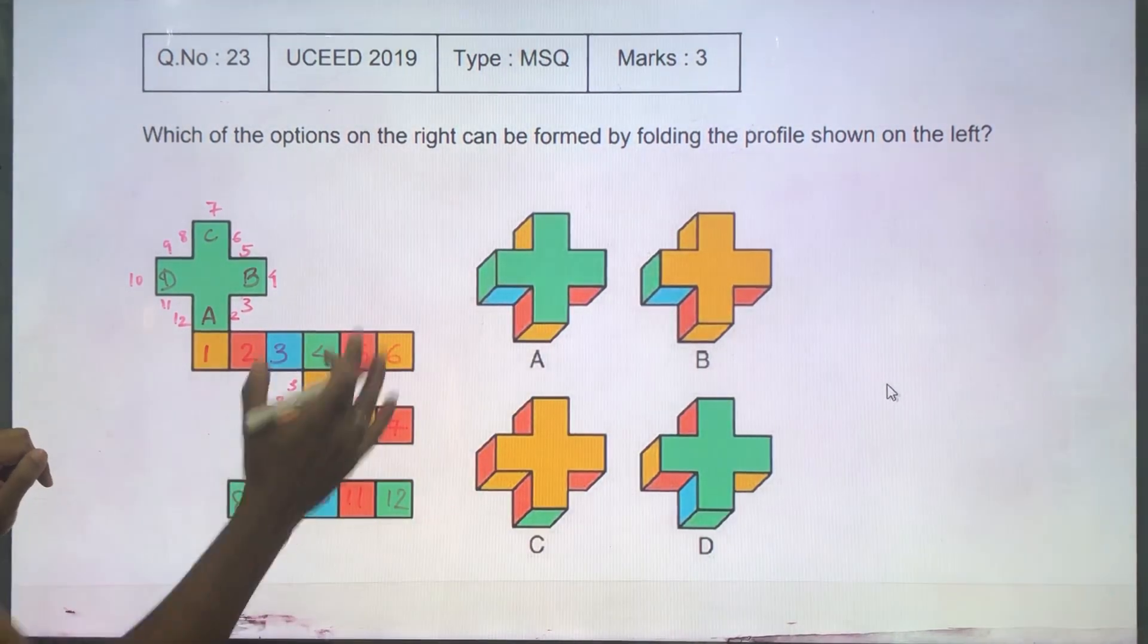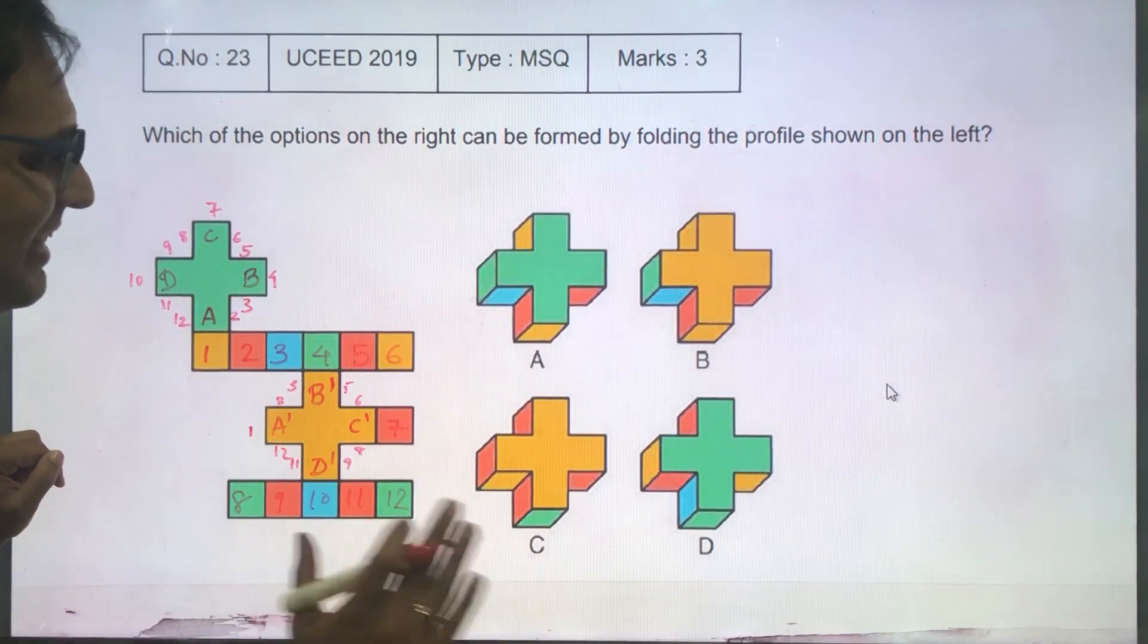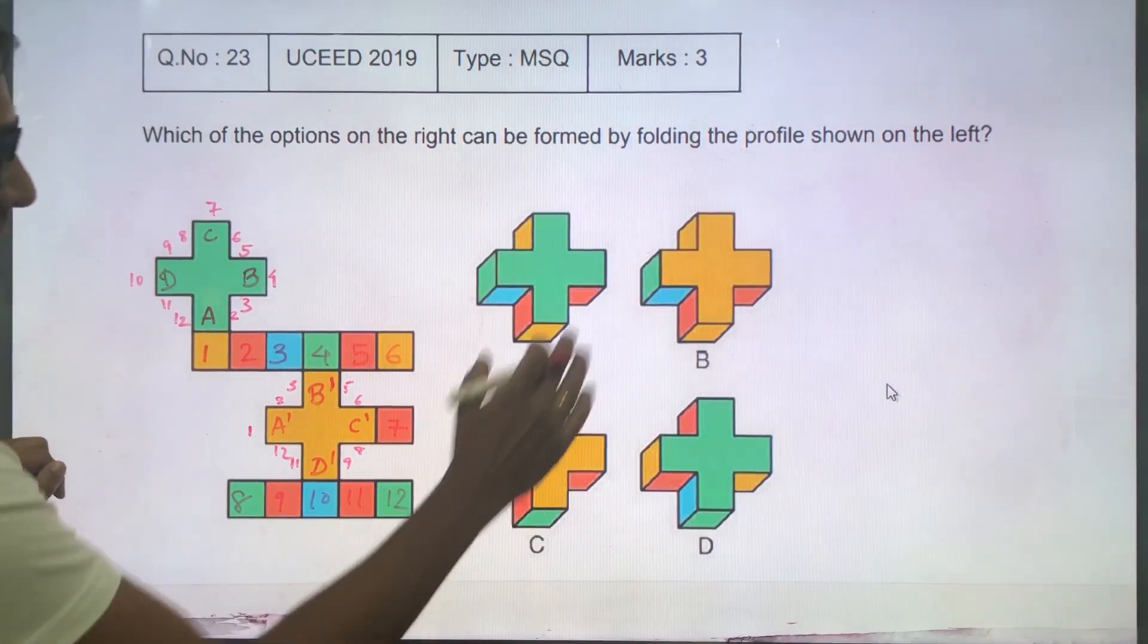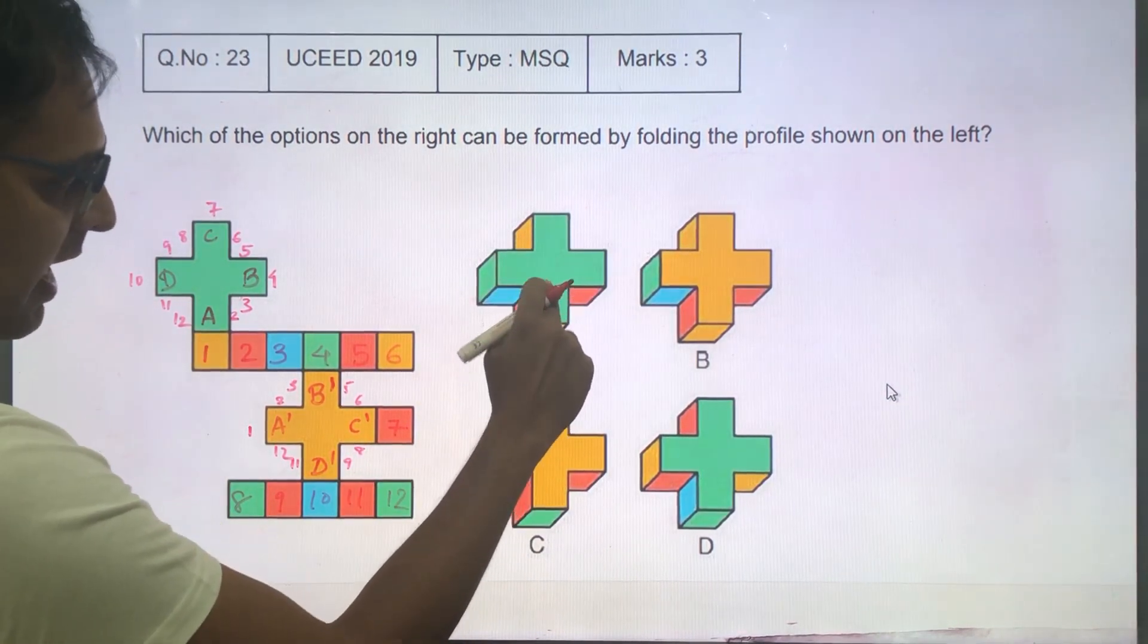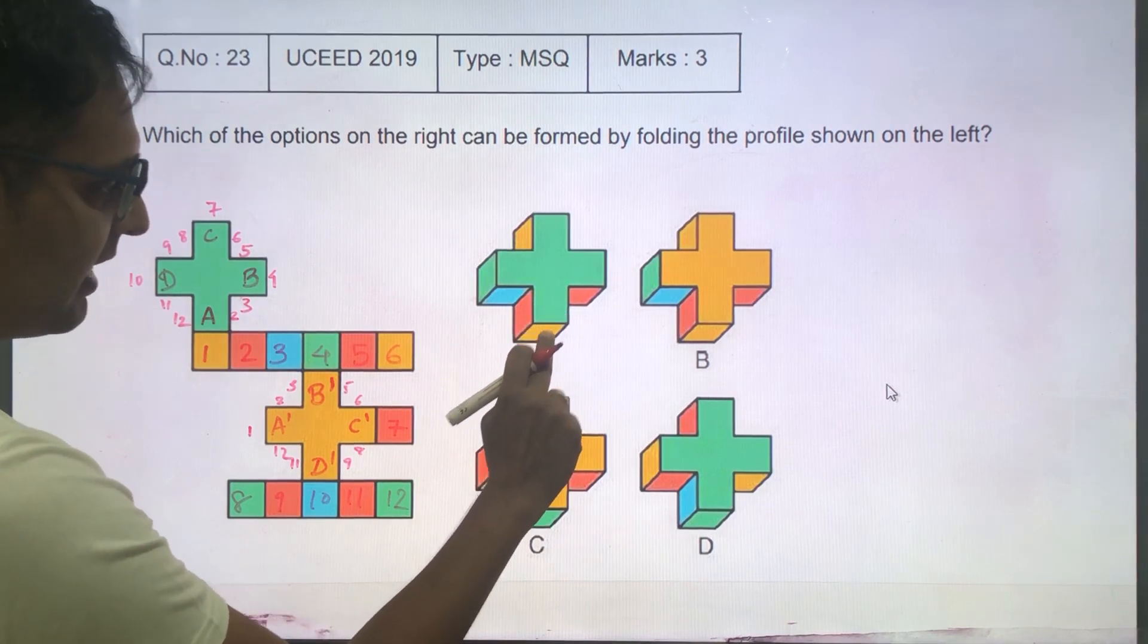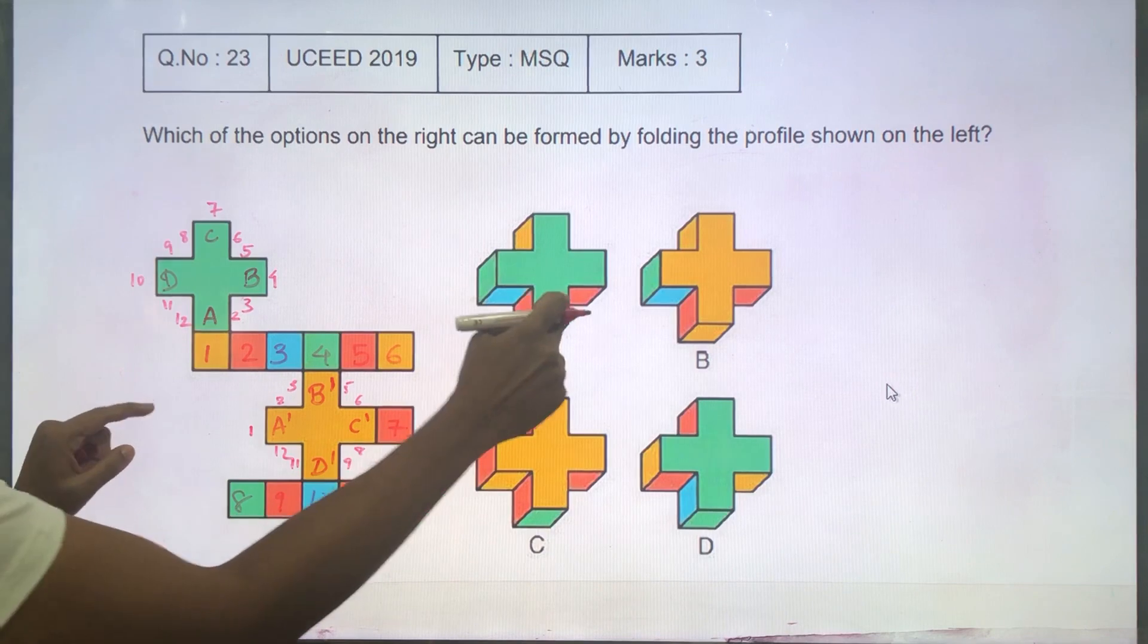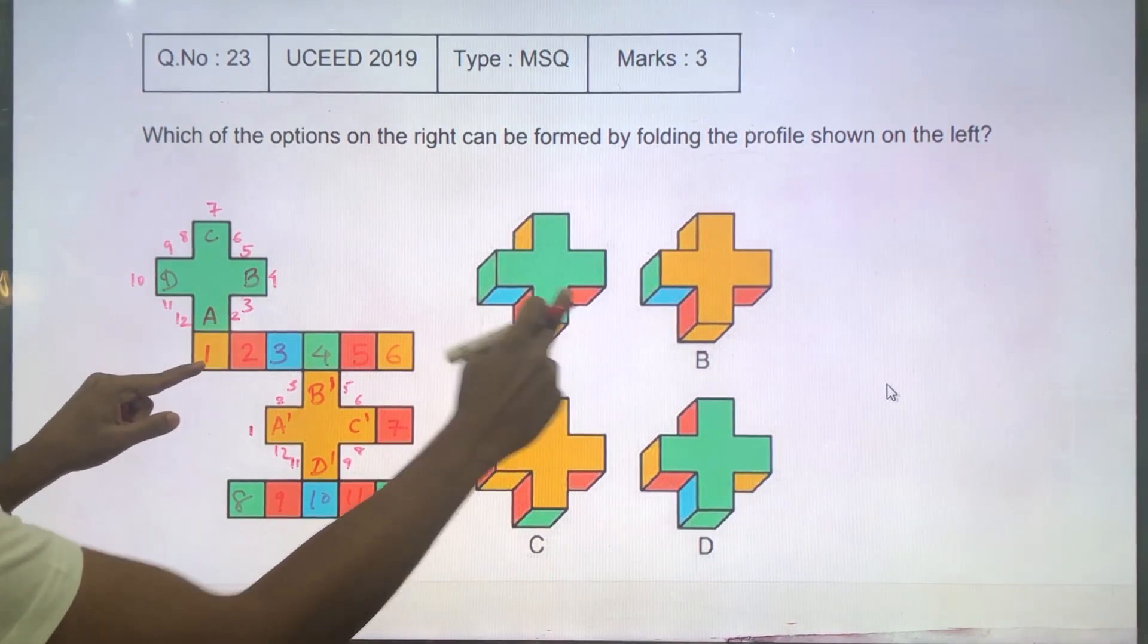Now, let's look at the options and then we will be able to eliminate easily. I am going to show you one option, for example, this one. This is the top, okay? And this particular side has a yellow piece next to it, okay?